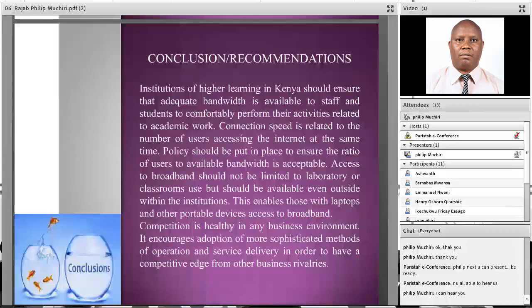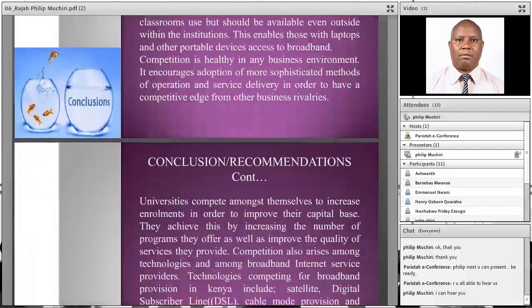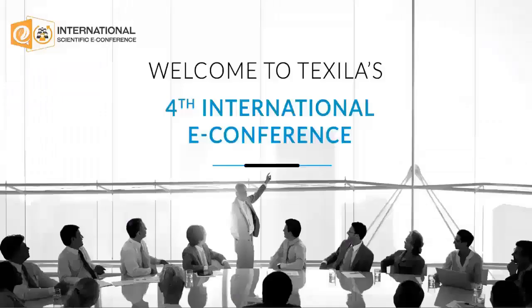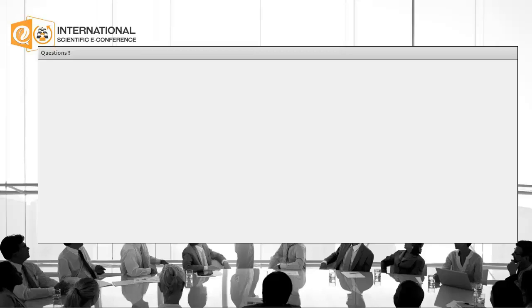In conclusion and recommendation, institutions of higher learning in Kenya should ensure that adequate bandwidth is available to staff and students to comfortably perform activities related to academic work. Connection speed is related to the number of users accessing the internet at the same time. Policy should be put in place to ensure that the ratio of users to available bandwidth is acceptable, and access to broadband should not be limited to the laboratory.